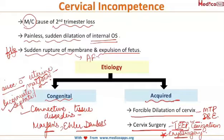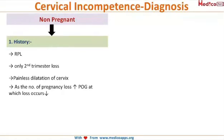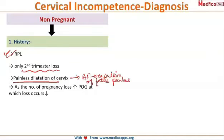For the diagnosis of cervical incompetence, history is very important. The patient will have a history of recurrent pregnancy loss — specifically second trimester losses in which there is painless dilatation of the cervix followed by painless expulsion of the fetus. If the patient is a multigravida, as the number of pregnancy losses increases, the gestational age at which the loss occurs decreases.